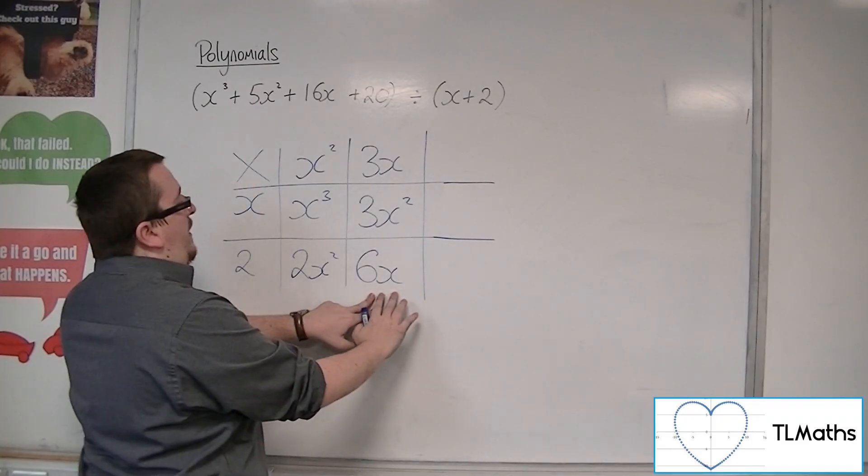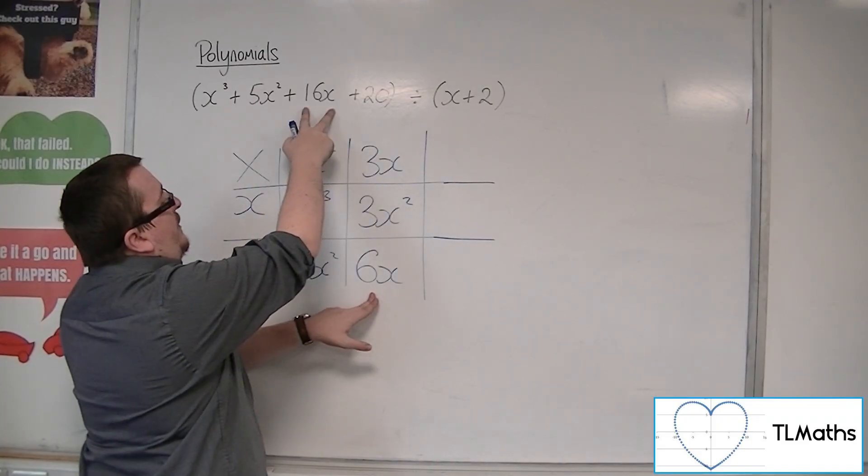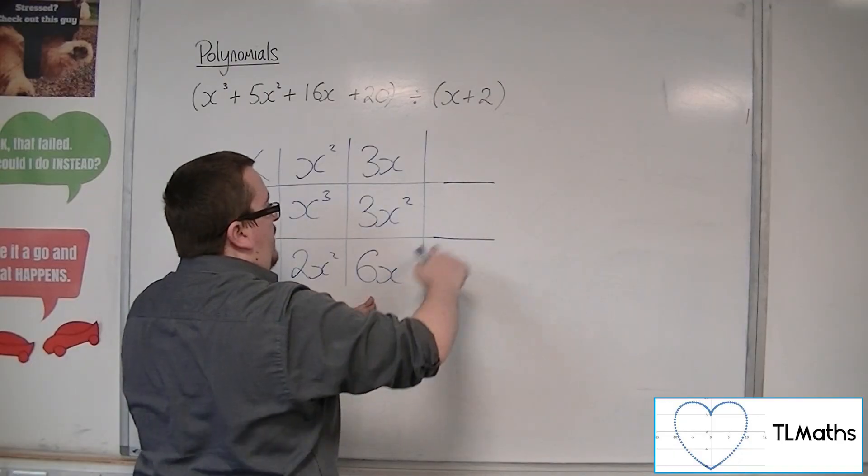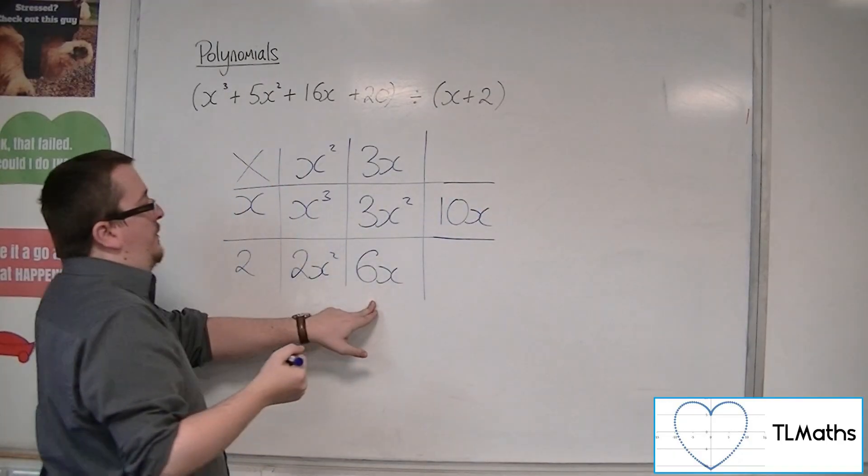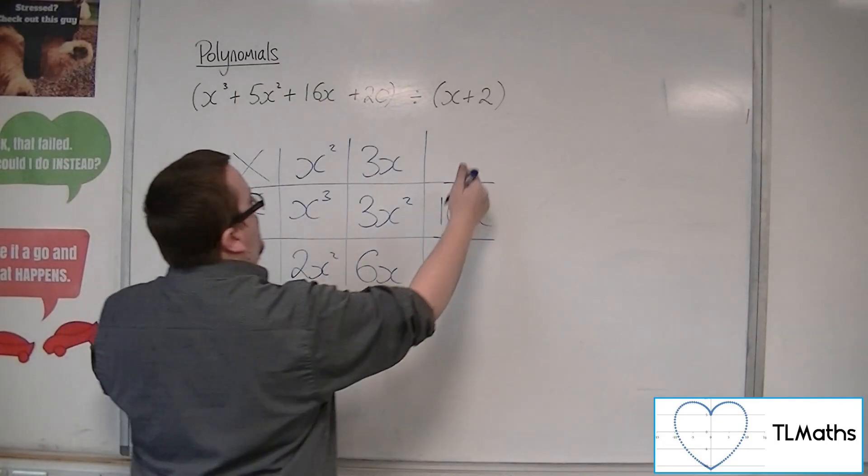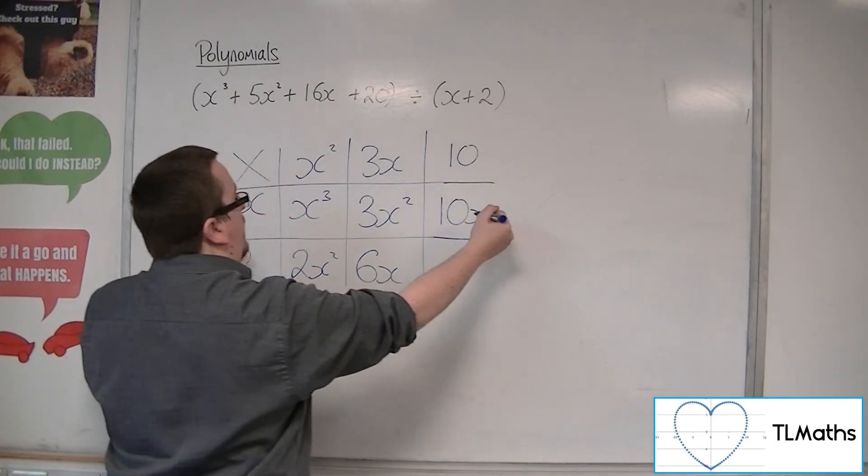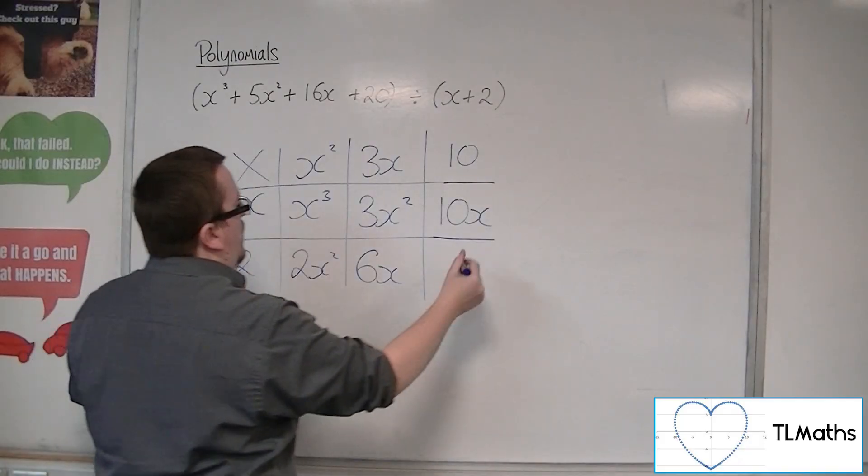Now, do I want 6x? Well, I actually want 16x. So, I need these two pieces to add up to 16x. So, that would have to be 10x. x times 10 will make the 10x, and 10 times 2 will make the 20.